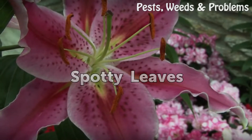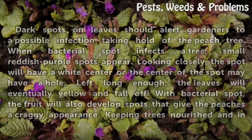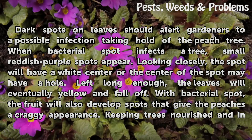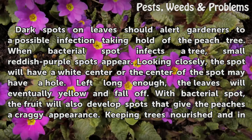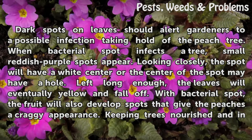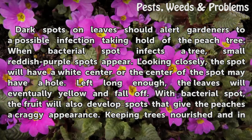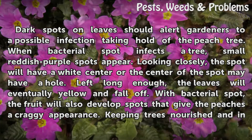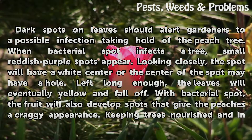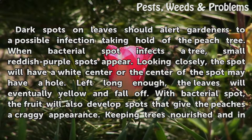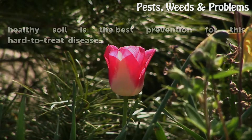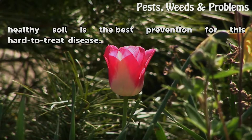Spotty Leaves. Dark spots on leaves should alert gardeners to a possible infection taking hold of the peach tree. When bacterial spot infects a tree, small reddish-purple spots appear. Looking closely, the spot will have a white center, or the center of the spot may have a hole. Left long enough, the leaves will eventually yellow and fall off. With bacterial spot, the fruit will also develop spots that give the peaches a craggy appearance. Keeping trees nourished and in healthy soil is the best prevention for this hard-to-treat disease.